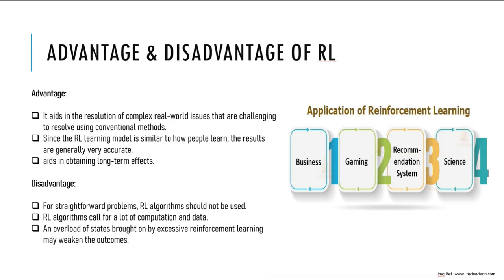Now let's look at real life examples. Reinforcement learning can be used in real-time bidding for online advertisements, where an agent learns to optimize bids based on user behavior and market conditions. Another example is podcast recommendation, where an agent learns to attract and retain viewers by selecting relevant and engaging content. Another example is self-driving cars, where the agent learns to navigate safely by sensing road conditions and traffic signals.